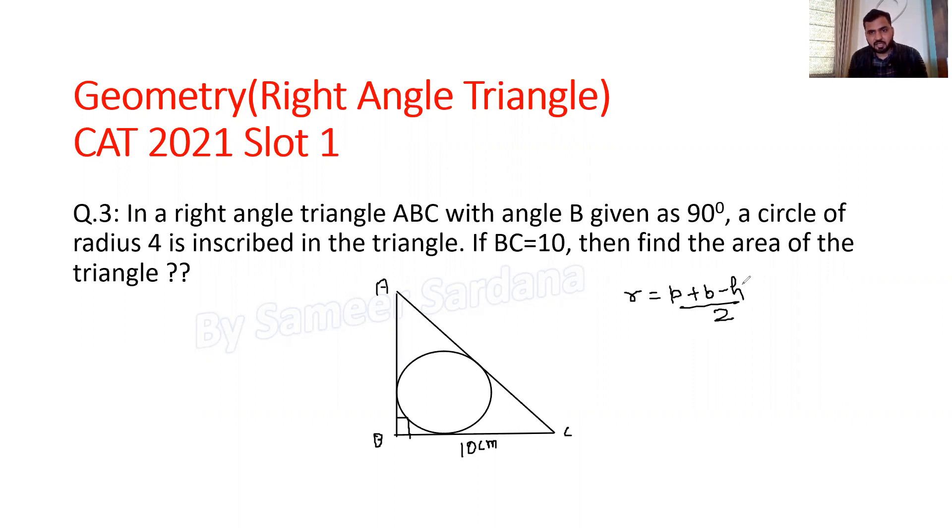The in-radius is given as 4. We know p (we don't know), b is 10, so we have 4 = (p+10-h)/2.